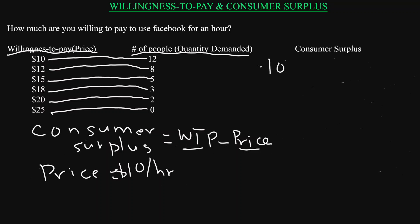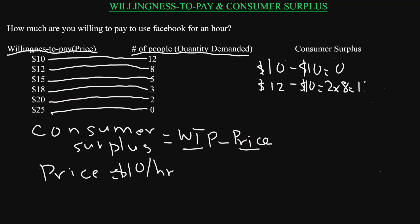That comes to zero — so zero consumer surplus for each of those 12 persons. For the eight people willing to pay $12, the consumer surplus is $12 minus $10, which equals $2 per person. With eight people, the total consumer surplus for that group is $16.